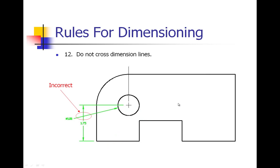Number twelve: do not cross dimension lines because it doesn't look very good and makes it difficult to read. Rather than putting this diameter of one inch crossing this dimension line, we would want to pull that up a little ways.